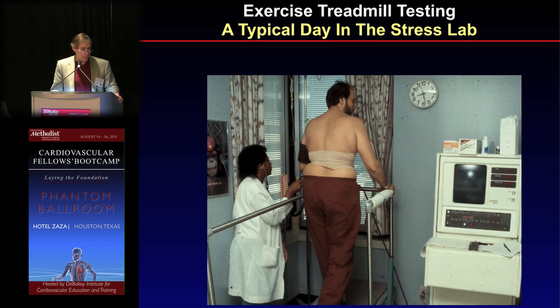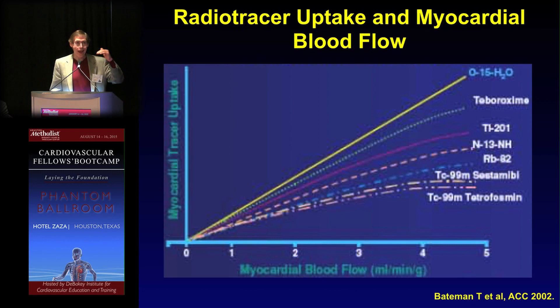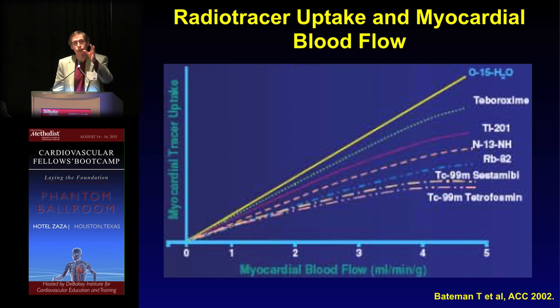There's another very important concept in nuclear cardiology: radiotracer uptake dependent on flow. What you'd like to see — and you do see this with O-15 water — is a linear increase in myocardial tracer uptake as myocardial blood flow increases. But most of the radiotracers we use, especially the SPECT tracers like technetium sestamibi or tetrofosmin, have rollover at high flows. As flow increases, uptake of tracer does not, which can lead to a relative reduction when looking at differences in flow between normal and abnormal areas.